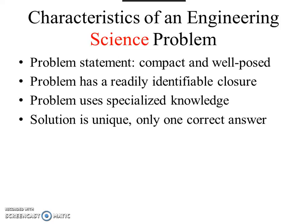Engineering science problems use specialized knowledge — think of classes like controls, thermodynamics, heat transfer, fluid mechanics, manufacturing, and so forth. That's the specialized knowledge required to solve problems in the engineering science domain. Ultimately the solution is unique: there's only one correct answer, and once you get to that correct answer the problem is solved and you don't really have to spend any more time thinking about it.